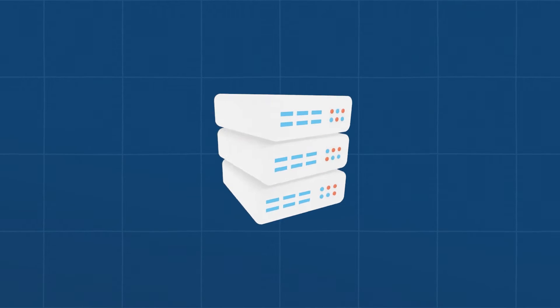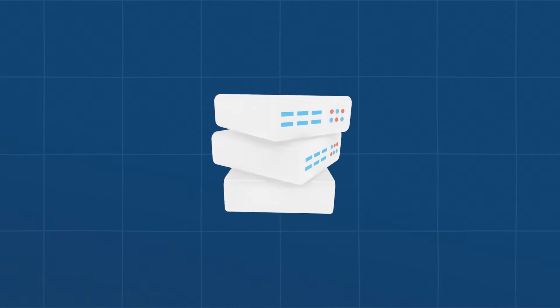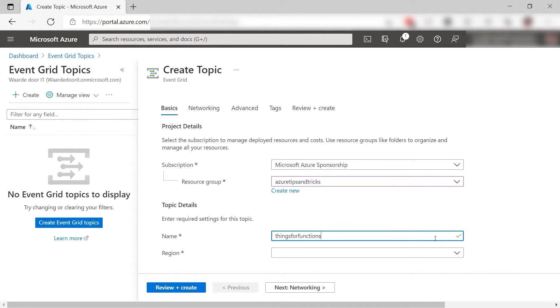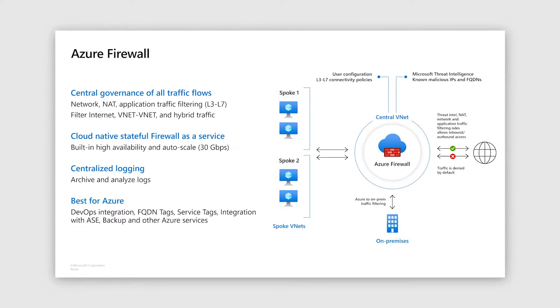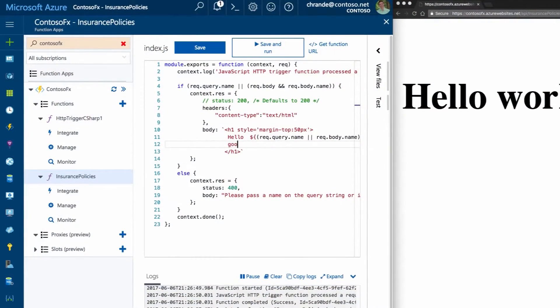Disk Storage is another type of storage — durable and highly available storage for Azure virtual machines. Elasticity simply means the ability of a system to increase and decrease in size. Event Grid is a fully managed event routing service that enables you to create rules and automatically send messages to other Azure services. Fault Tolerance is a property that enables a system to continue operating properly in the event of a failure of one or more components. A Firewall is a type of software that either allows or blocks certain kinds of internet traffic to pass through it.